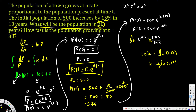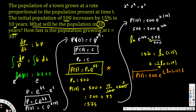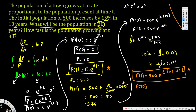With k known, we can write the general equation: P(t) = 500 · e^((1/10)·ln(1.15)·t). No matter what time is given, we can plug it in. Since we want the population at 30 years, we plug in t = 30: P(30) = 500 · e^((1/10)·ln(1.15)·30).